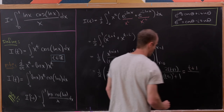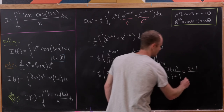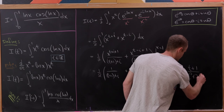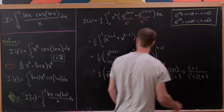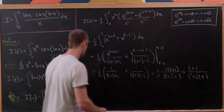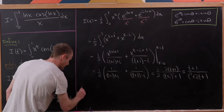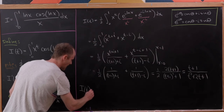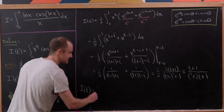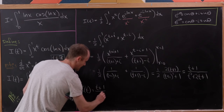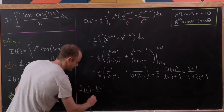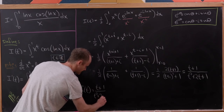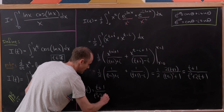For the numerator we have the sum of the denominators, which gives us 2 times t plus 1. Canceling, we have I(t) equal to t plus 1 over t squared plus 2t plus 2.